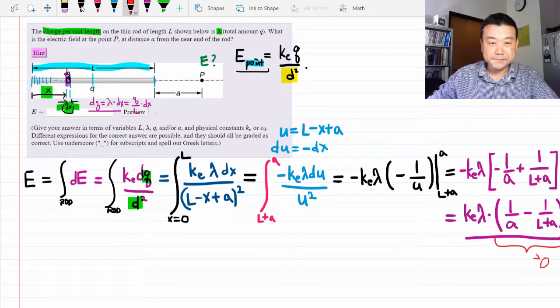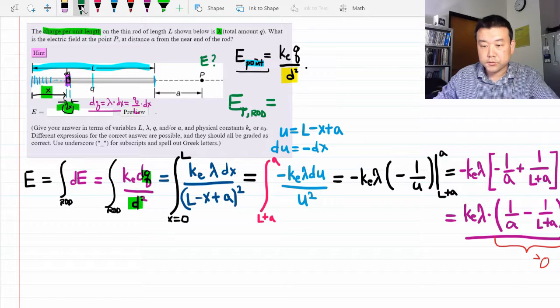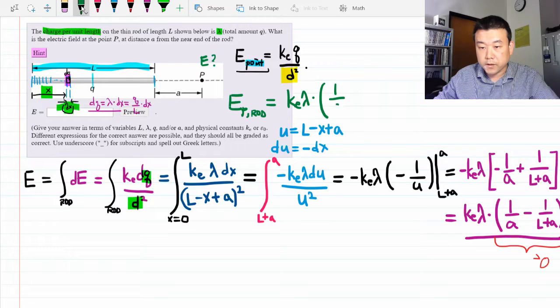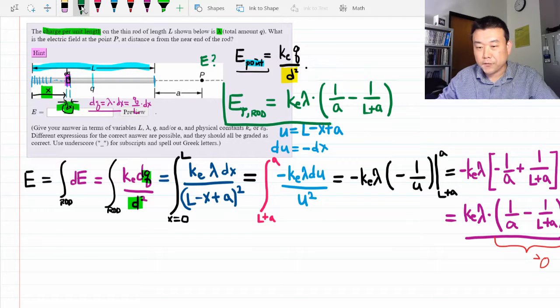It's 1 over smaller number minus 1 over bigger number that should be positive. So that's the answer. Here, the electric field at point P due to the rod is equal to Coulomb's constant times lambda times 1 over A minus 1 over length of the rod plus A.